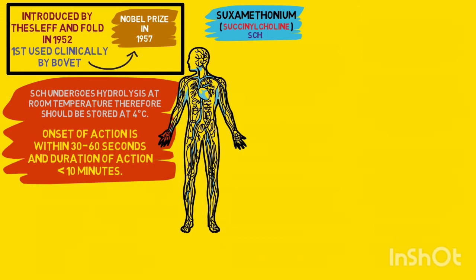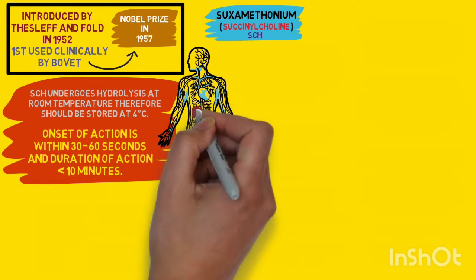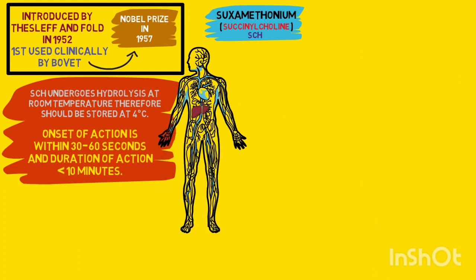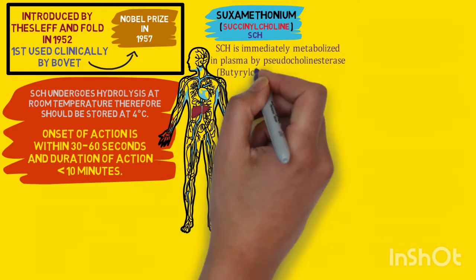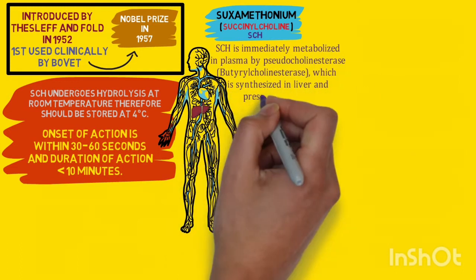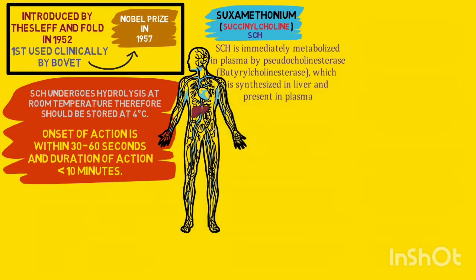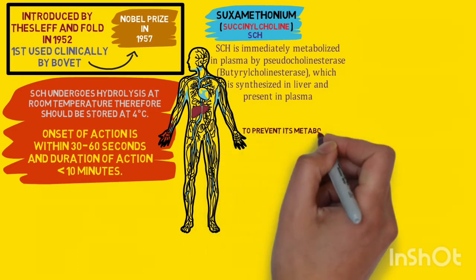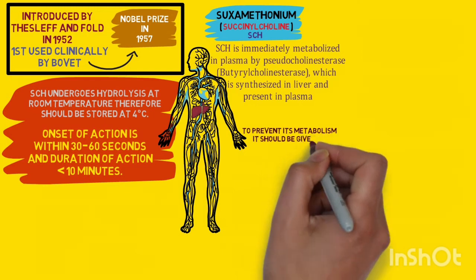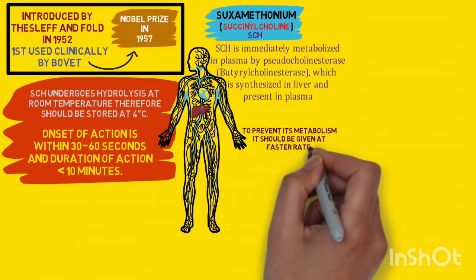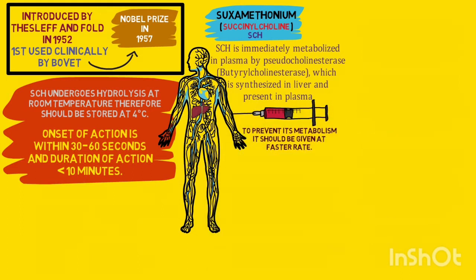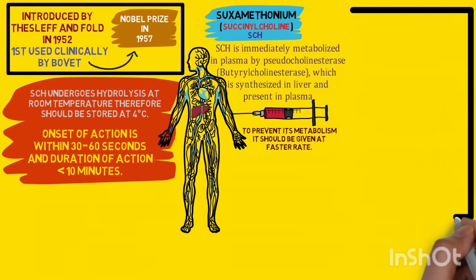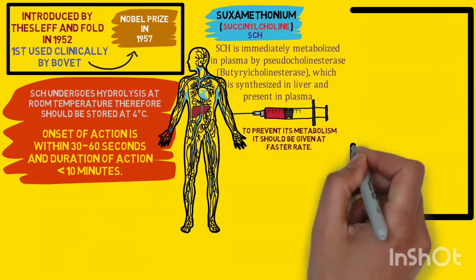However, due to side effects, the use of succinylcholine is restricted to rapid sequence induction or difficult airway management situations. It is rapidly metabolized in the plasma by pseudocholinesterase or butyrylcholinesterase enzyme, which is synthesized in the liver and present in plasma. To avoid this rapid metabolism in the plasma, we have to inject succinylcholine rapidly.